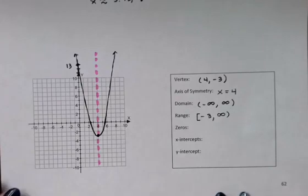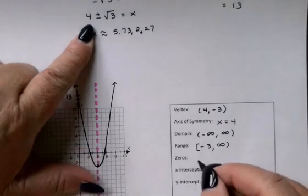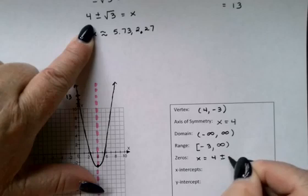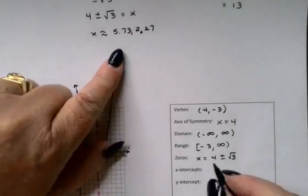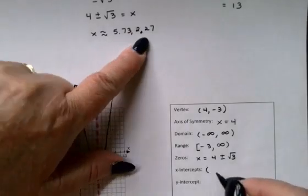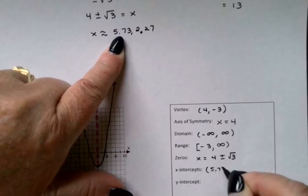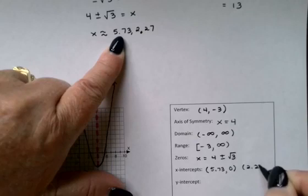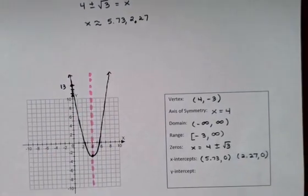All right. The zeros. We found the zeros right up here. I'm going to go ahead and write them down as the exact values: x = 4 ± √3. And then the x-intercepts. If I write these as points, maybe I'll use the decimal approximations this time: (5.73, 0) and (2.27, 0) would be my x-intercepts.